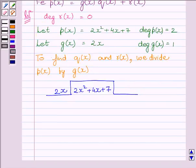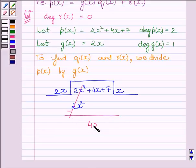Now, to find Qx and Rx, we divide Px by Gx. Let us start the division now. First of all, we will multiply 2x with x to get 2x squared. Now, subtracting our like terms and rewriting the rest of the terms of the division, we get 4x plus 7.